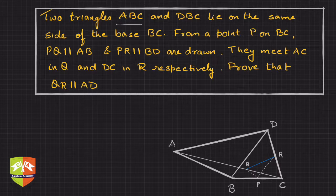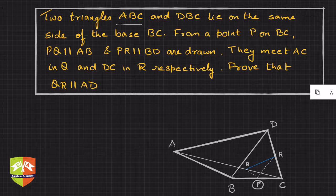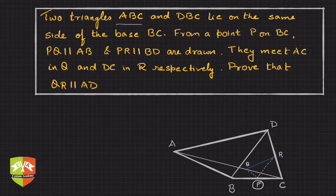From a point P on BC — you can see point P here — PQ is parallel to AB and PR is parallel to BD.